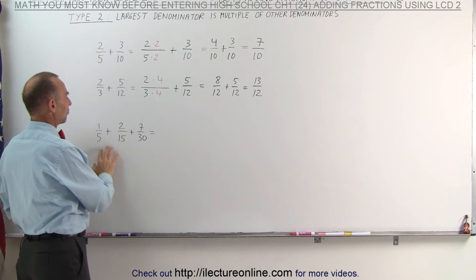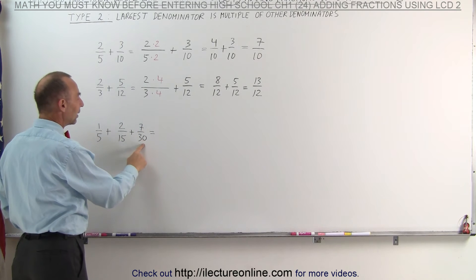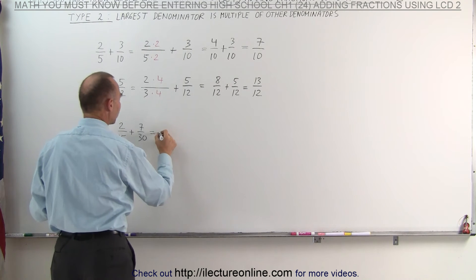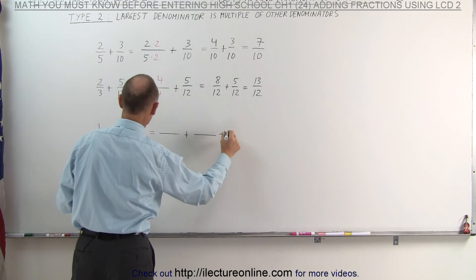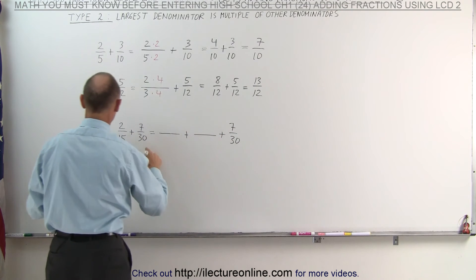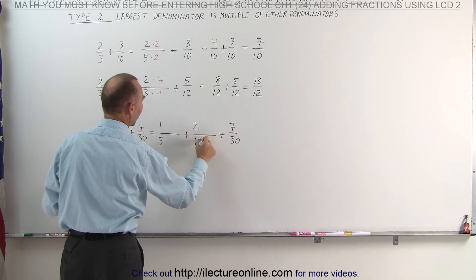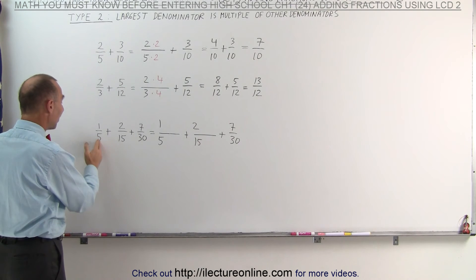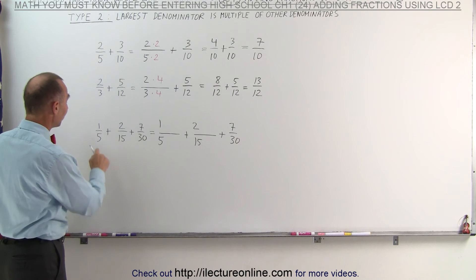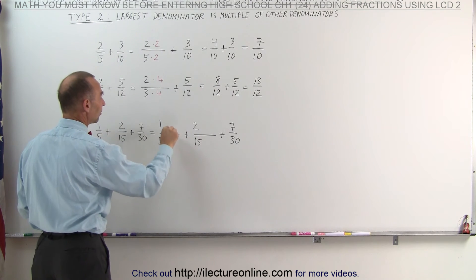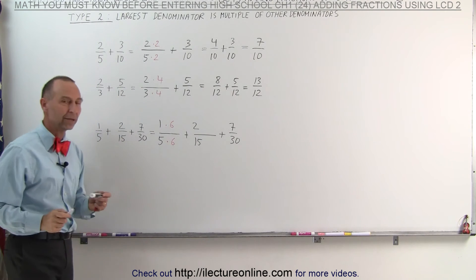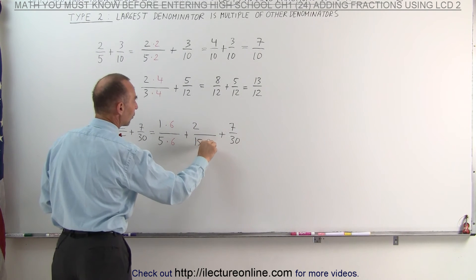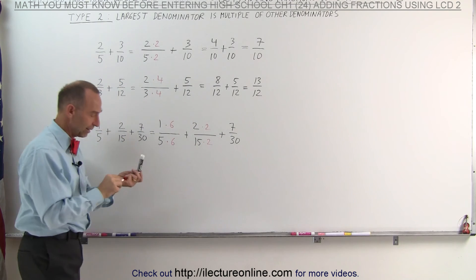In the third exercise, notice we have three fractions, but the denominator of the third fraction is a multiple of the denominators of the other two fractions, which means we're going to have to change the first two fractions and add it to the third fraction, which will be unchanged. How do we change the first two fractions? We ask ourselves, how many times does 5 fit into 30, or what do I need to multiply 5 by to make it equal to 30? The answer is 5 times 6 is 30, which means I'm going to multiply the denominator times 6, and I must also multiply the numerator times 6. 15 goes into 30 exactly twice, so I have to multiply 15 times 2 to make it into 30, and I must multiply the numerator by the same number.